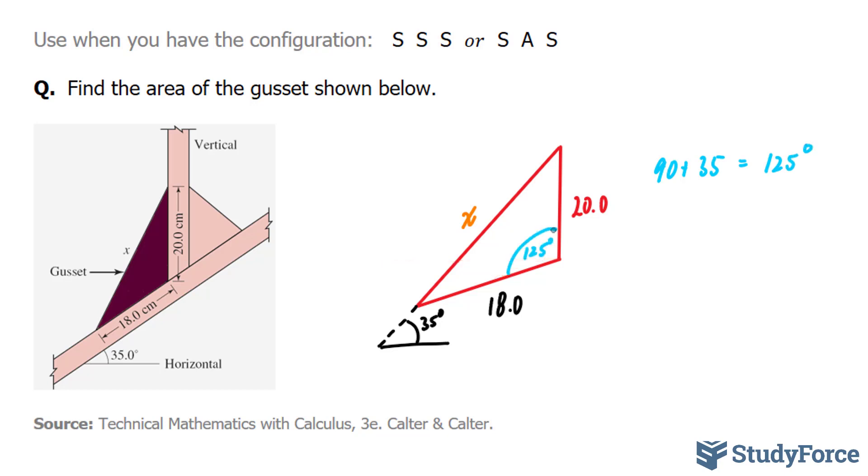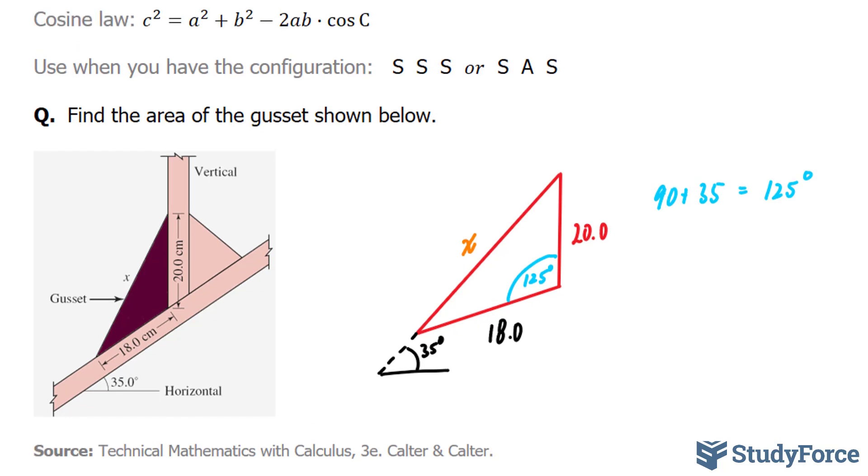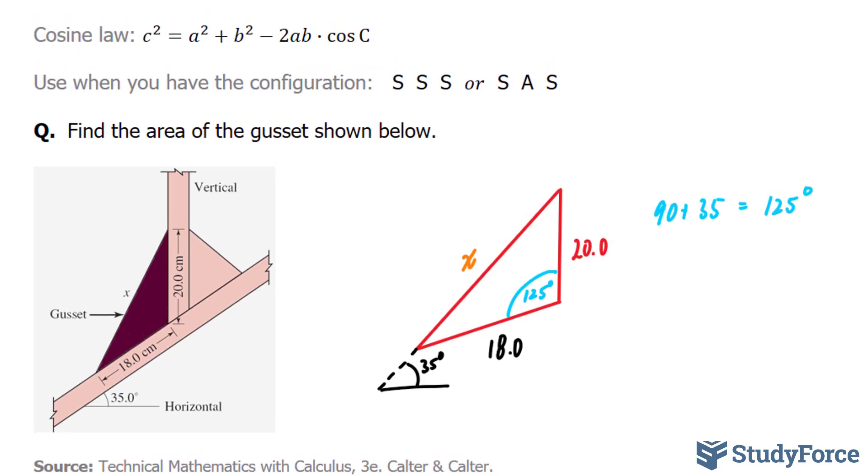Now we can use the cosine law, and the cosine law that we have here is in terms of c. So let's call this unknown side c, or little c, this will be big C, big A, and big B.